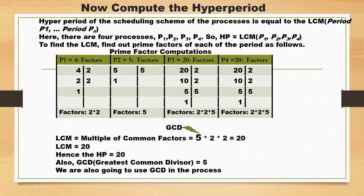Now let us compute the hyperperiod. The hyperperiod equals the LCM of the periods of P1 through P4. Computing prime factors: 4 = 2×2, 5 = 5, 20 = 2×2×5, 20 = 2×2×5. The LCM is 2×2×5 = 20. So the hyperperiod is 20 milliseconds.